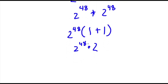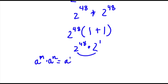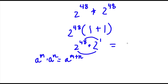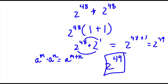Now, 2 is the same thing as 2 to the power of 1. These two have the same base, and when multiplying two exponents with the same base — a to the power of m times a to the power of n equals a to the power of m plus n. So this equals 2 to the power of 48 plus 1, which is equal to 2 to the power of 49. So 2 to the power of 49 is our answer.